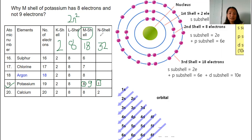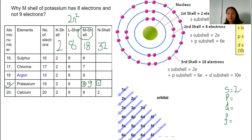In addition to the shells K, L, M, N, there are sub-shells also. These sub-shells are S, P, D, and F. Each of these sub-shells has its own unique electron-holding capacity. The S sub-shell can hold only two electrons, P can hold six electrons, D can hold ten electrons, and F can hold 14 electrons.